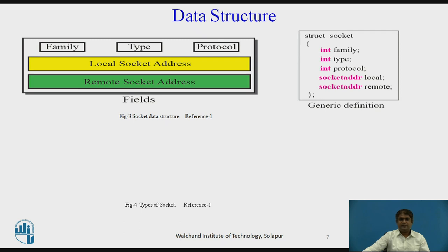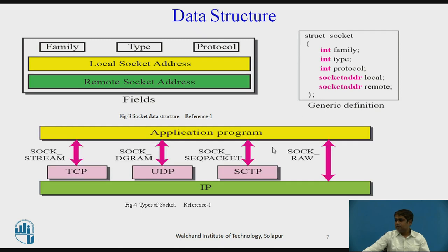The second field is type, which defines four types of socket. The first is SOCK_STREAM, which is used for TCP. The second is SOCK_DGRAM, which is used for UDP protocol. The third is SOCK_SEQPACKET, which is used for HCTP.